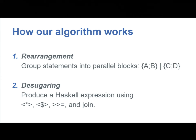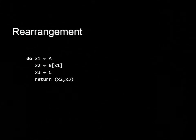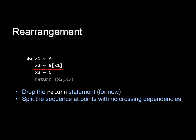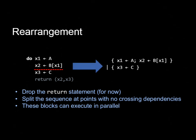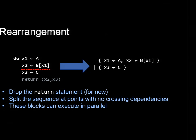Our algorithm works in two phases. First of all, we do something called rearrangement. Rearrangement groups the statements into parallel blocks. We're going to use the vertical bar as a way to indicate the boundary between blocks. And finally, we'll do desugaring. Desugaring is a purely mechanical process that takes the rearranged expression and turns it back into Haskell syntax using applicatives and monads. Here's an example of rearrangement. Let's take this sequence here. A and then B that depends on A and C that doesn't depend on anything. We drop the return statement first. We split the sequence at points where there are no crossing dependencies, where there are no dependencies on a statement below the line on a statement above the line. This red line here indicates where we can split the sequence. And now the two blocks, the ones that are on either side of the line, become separate blocks in our composition separated by vertical bars here.